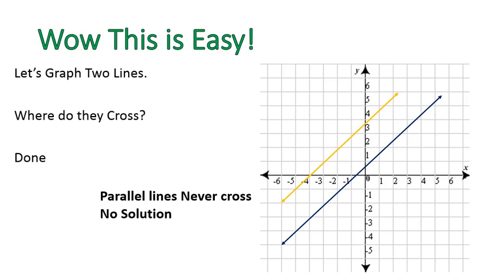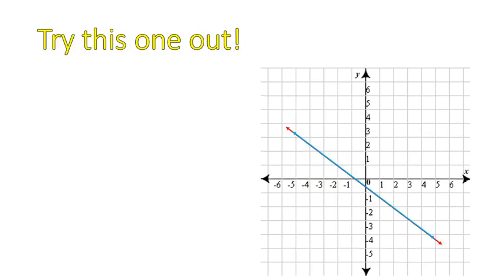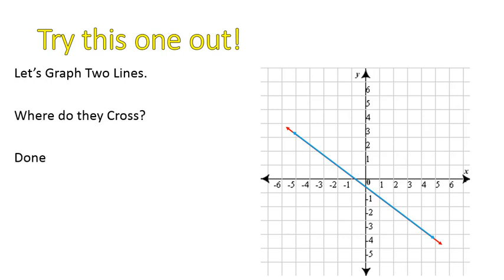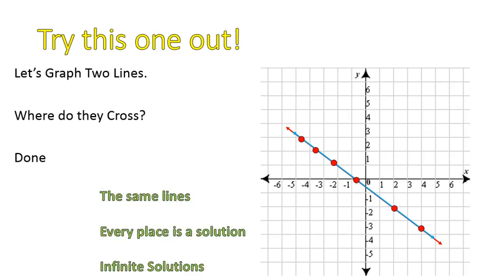How about this one? This is the third example type. We've got two lines — where do they cross? Well, they cross everywhere. The same exact line. So every place on each line is a solution. There are an infinite number of solutions to this system of linear equations.